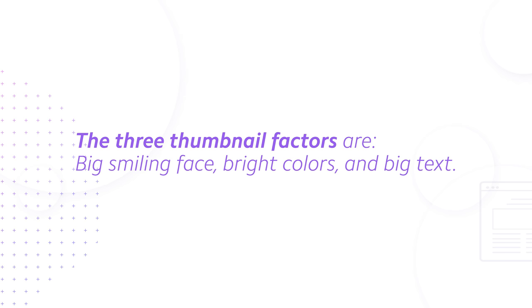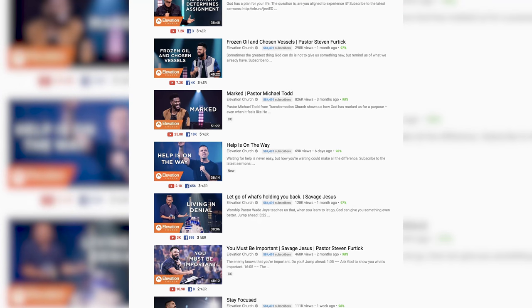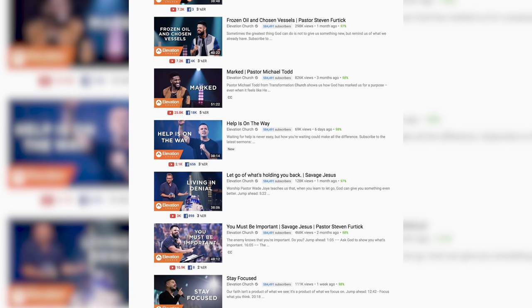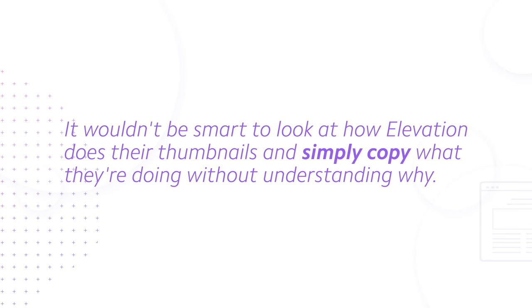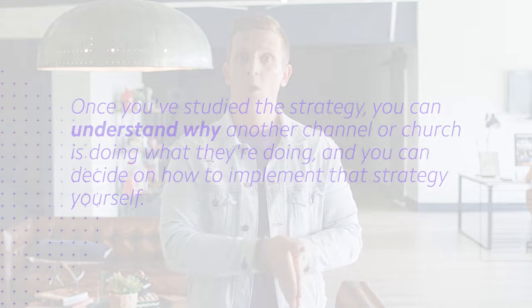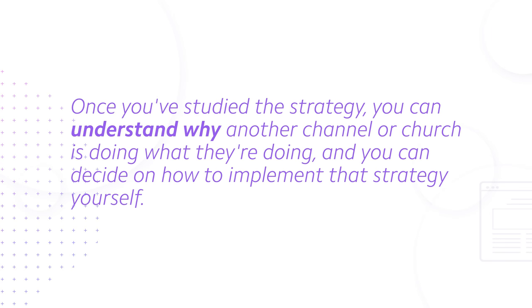So those three thumbnail factors are: big smiling face, bright colors, and big text. You know who else follows this formula? Elevation. Check out their YouTube channel thumbnails — they have each of those three elements present in every single one of them. This goes back to studying strategies versus copying tactics. It wouldn't be smart to look at how Elevation does their thumbnails and simply copy what they're doing without understanding why. But once you understand the science of human faces in photos and the ranking signals of click-through and watch time that YouTube pays attention to, once you've studied the strategy, you can understand why another channel is doing what they're doing and decide how to implement that strategy yourself.